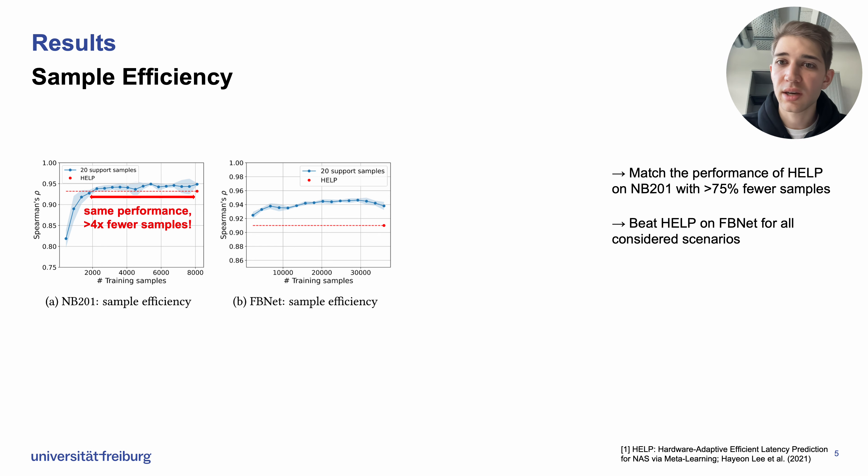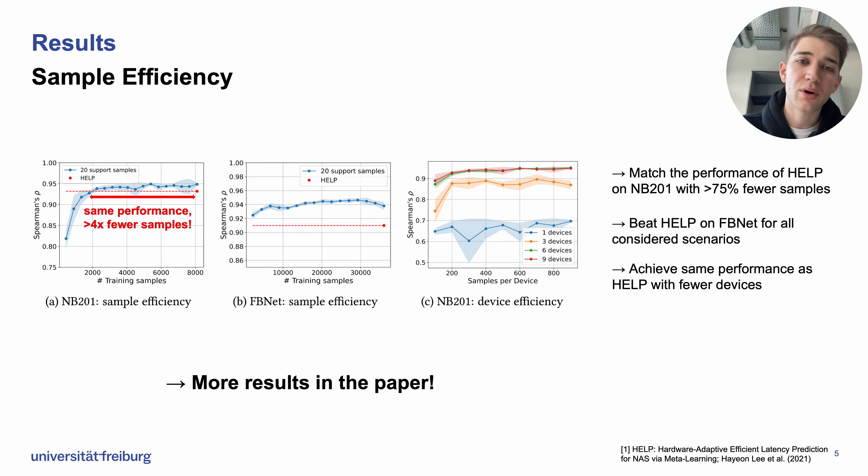We also looked at rank correlation again, but now reducing not only the number of training samples but also the number of training samples per device—the number of devices in the training set. Our reasoning here was that adding a new device is much more expensive than just measuring more latencies on a device you already possess.